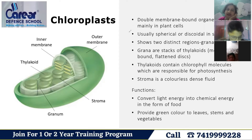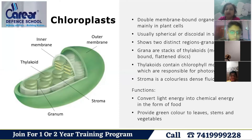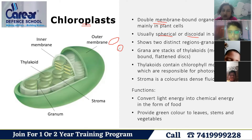Today we have completed the topic of chloroplasts. Chloroplasts are double-layered membrane-bound organelles found in plant cells. Chlorophyll is present in chloroplasts, which is a characteristic of plant cells. Chloroplasts are spherical, disc-shaped, or round in shape.